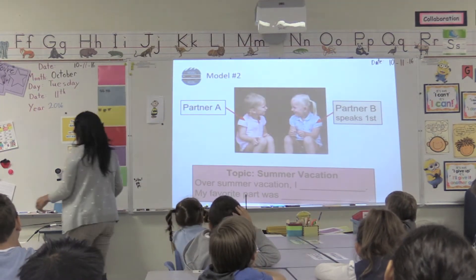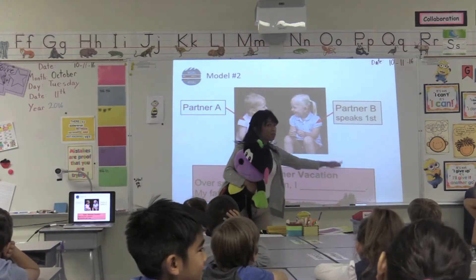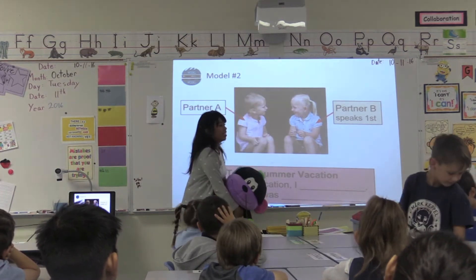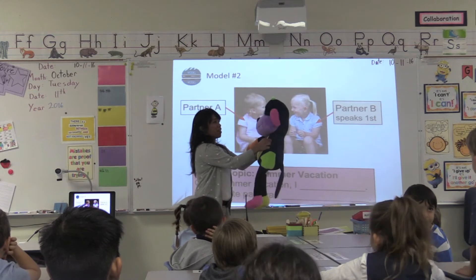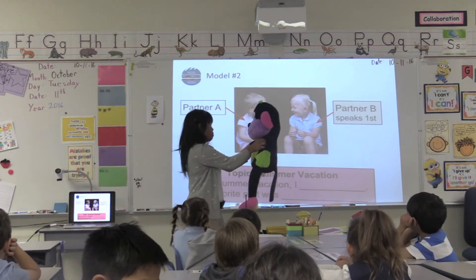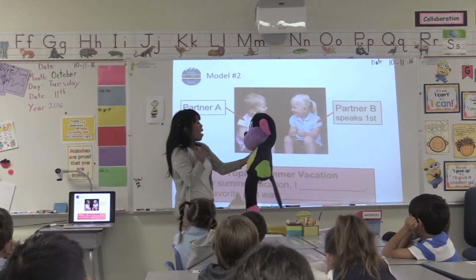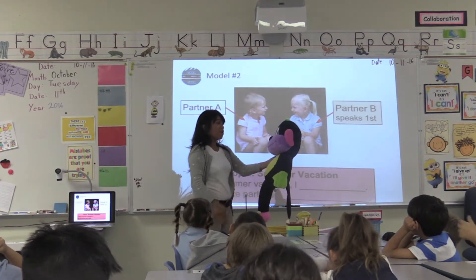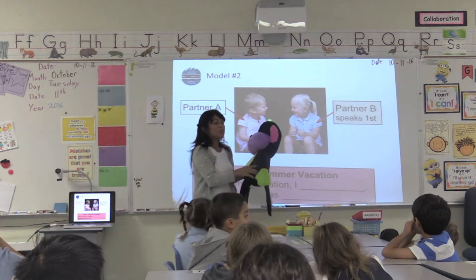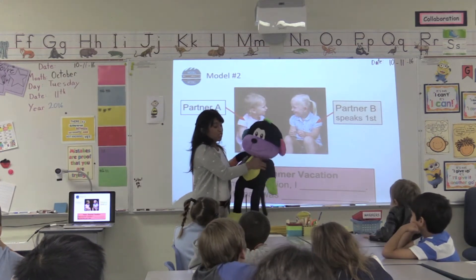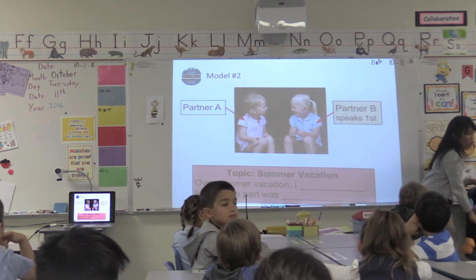I'll do one more with you. Marvin goes first this time — we're taking turns. Marvin says: 'On summer vacation I went to Costa Rica; my favorite part was going through the rain forest.' My turn: 'On summer vacation I went to Disney World; my favorite part was seeing Mickey Mouse.' Did you see how I followed the steps? One at a time, classroom voice, eye contact.